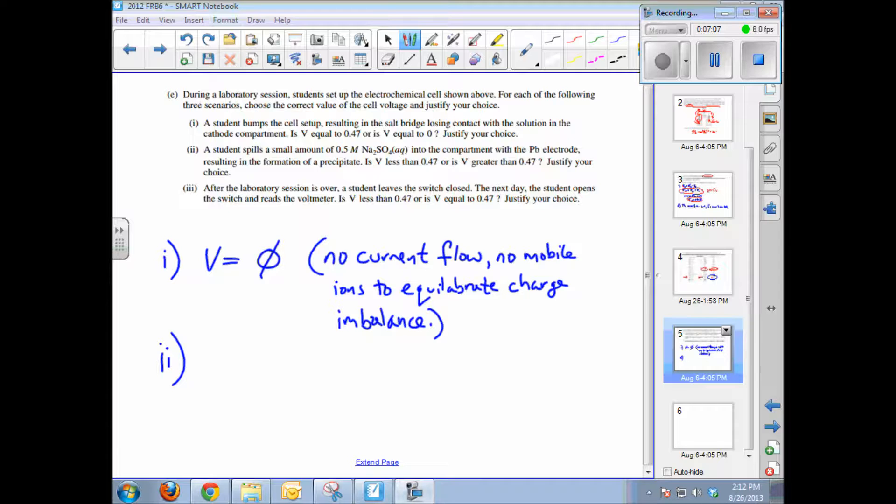Remember, mobile ions are necessarily to equilibrate any charge imbalance that occurs as the oxidized species at the anode loses electrons. That cell becomes more positive. So negative ions are needed to flow toward that through the salt bridge. And similarly, on the reduction side, it becomes more negative as electrons flow into the electrode being reduced. So ions are needed to equilibrate the charge imbalance. So if there's no salt bridge, no charge flows, you have a voltage of zero.